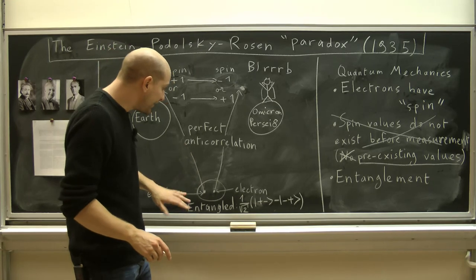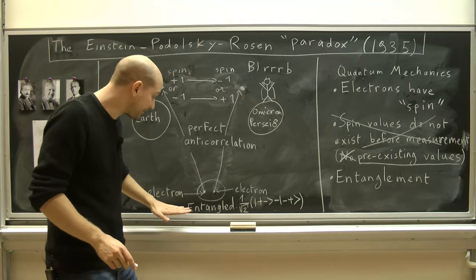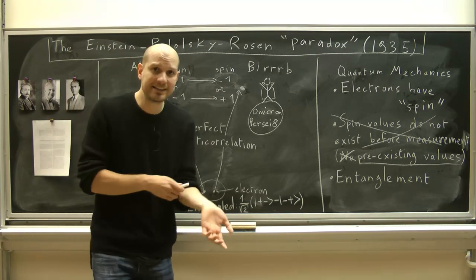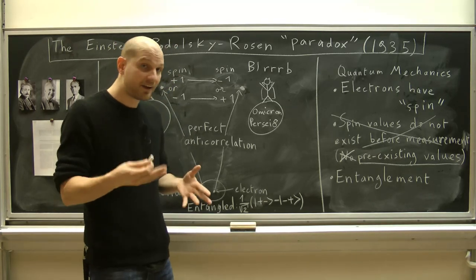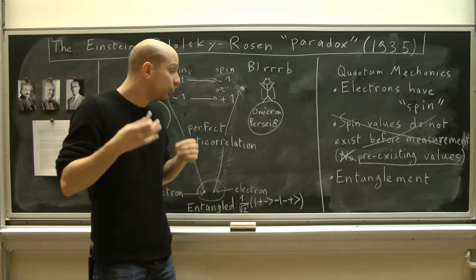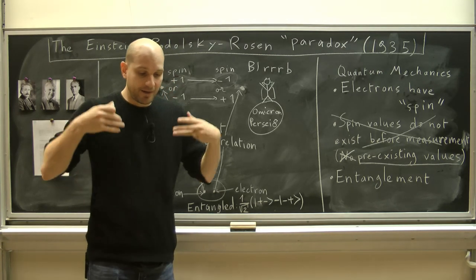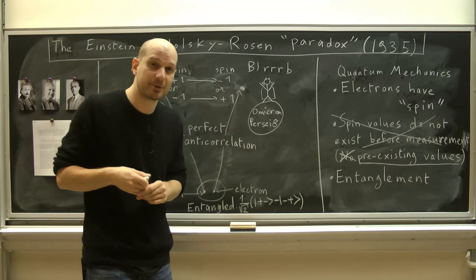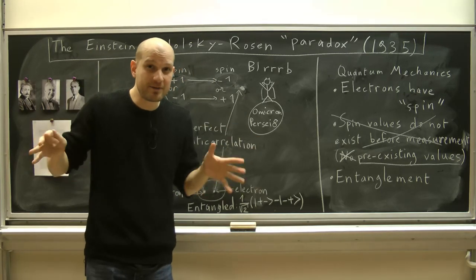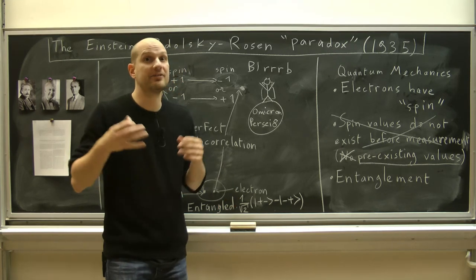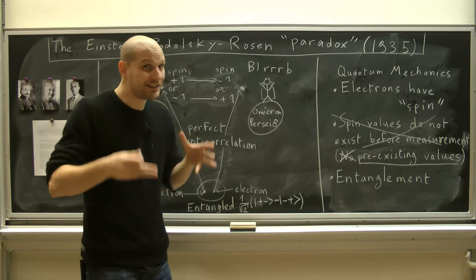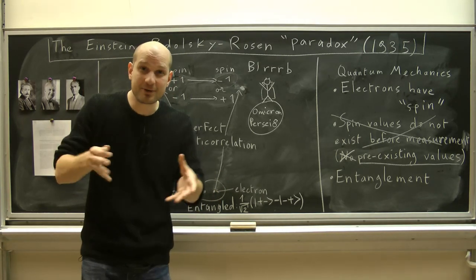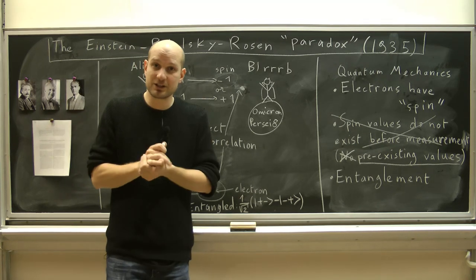Entanglement — the property we use in order to have non-locality — is in practice extremely short-lived. There are scientists who are trying to produce entanglement between quantum particles and make it last as long as possible, and at the very best they can keep entanglement alive for a matter of minutes. In practice, for most systems, entanglement can only be kept alive for a matter of microseconds — that is extremely short-lived.